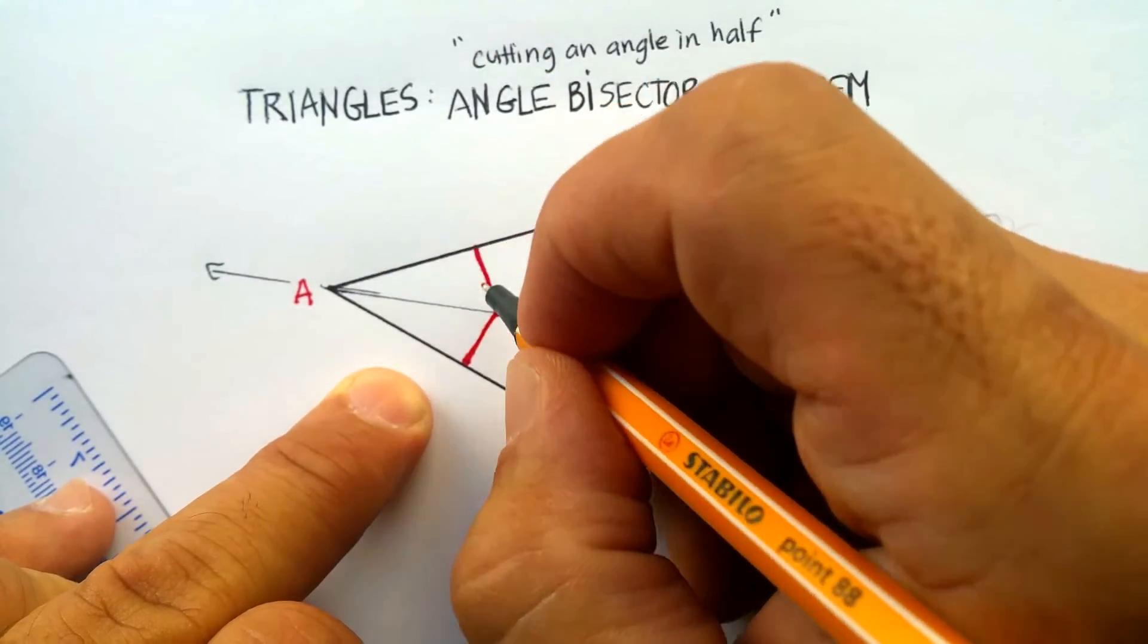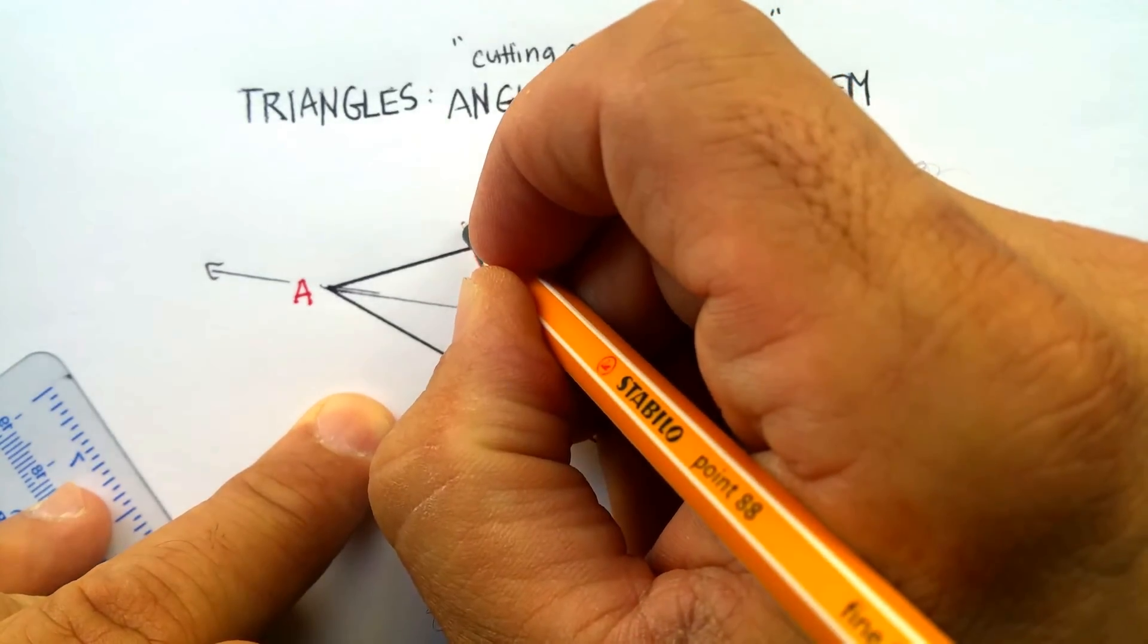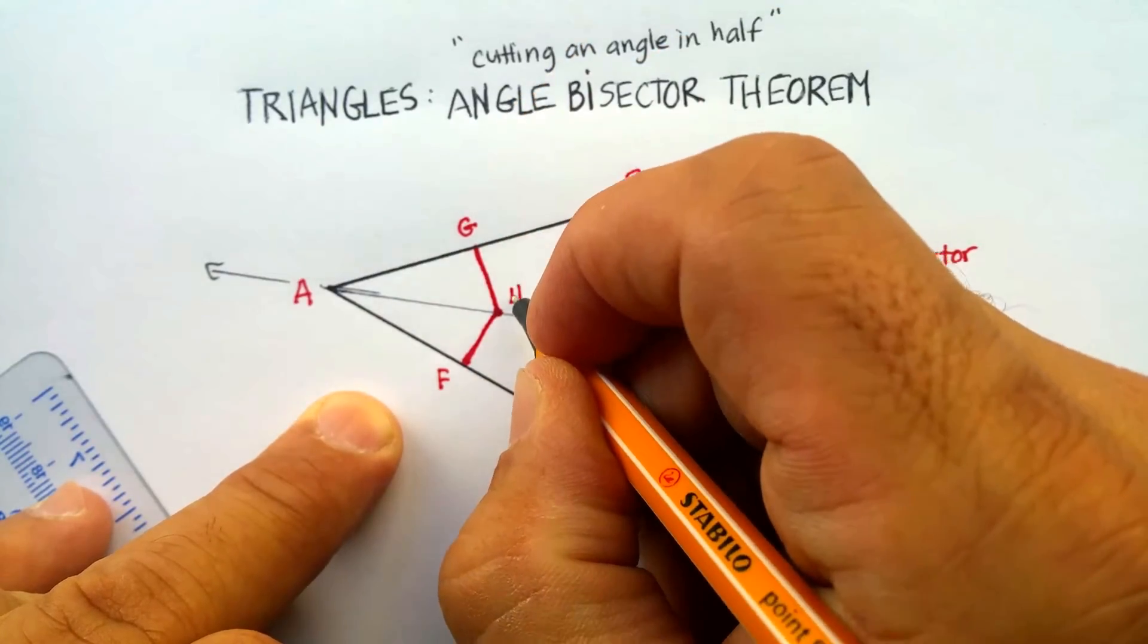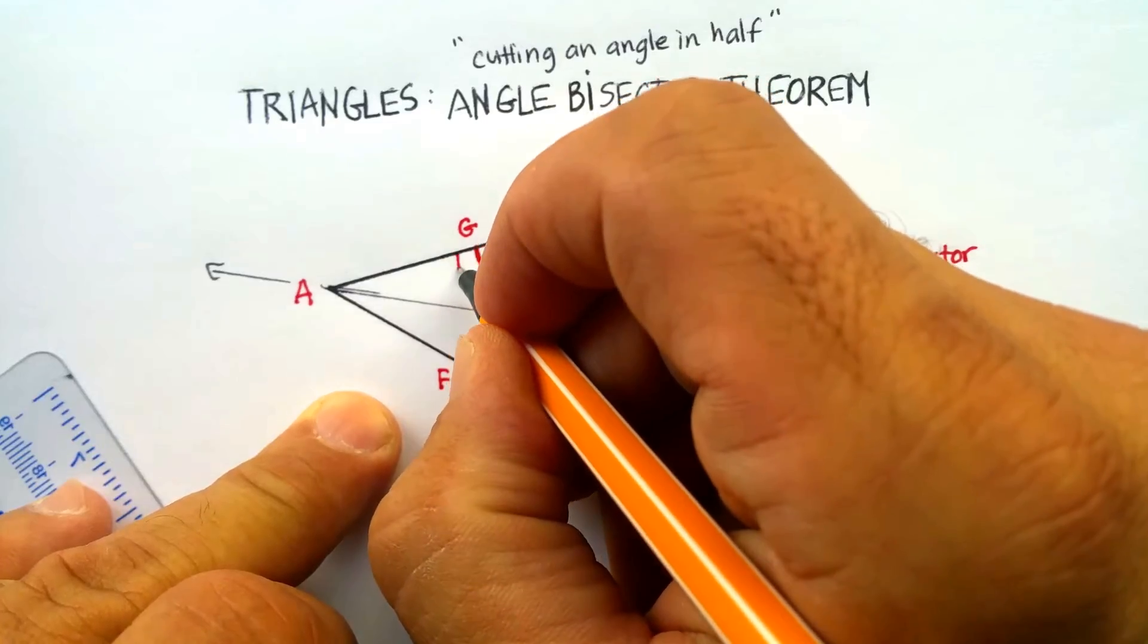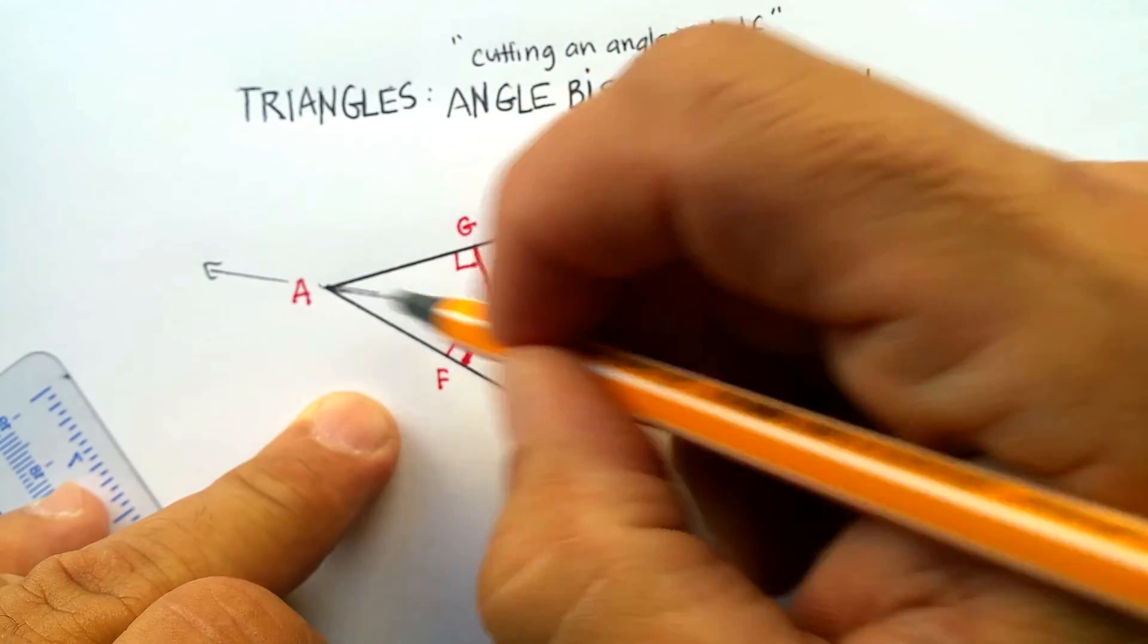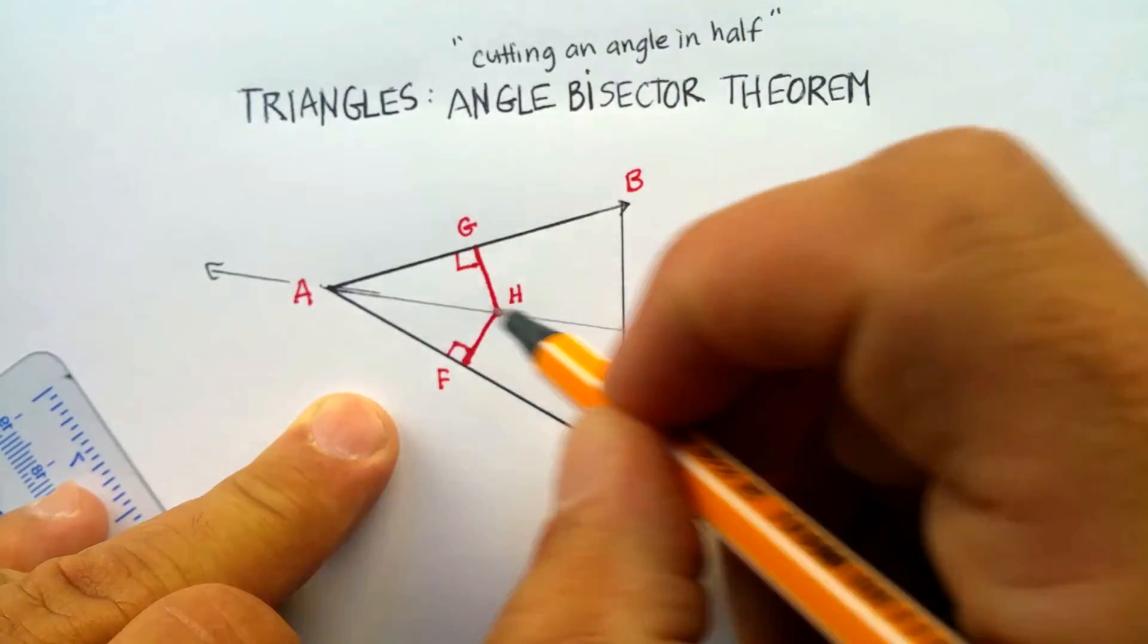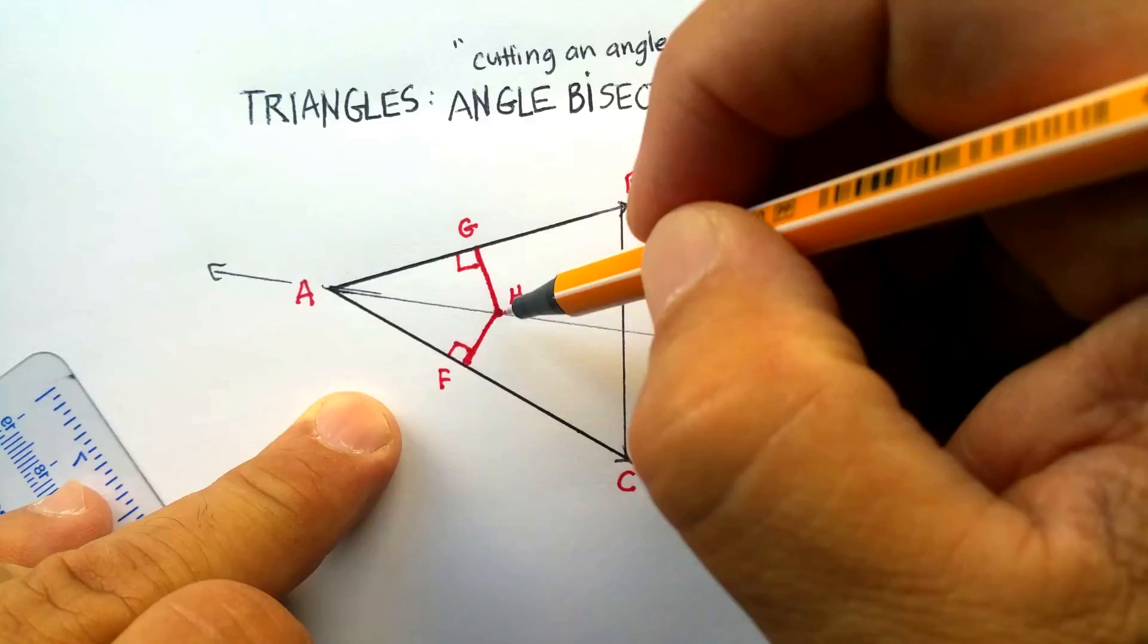Well, what that closest distance, and let's just call this F. And let's just call this G. And we'll call this point H. This closest distance forms a right angle. What you've done now is you've actually created a right triangle by forming the angle bisector and going to the nearest point.